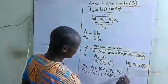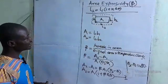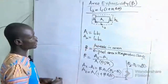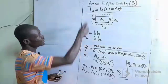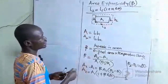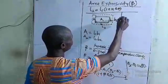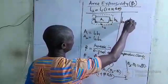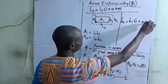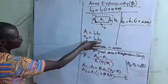Now if we want to relate the area expansivity with the linear expansivity, we make use of the following. The increase in length gives L2 = L1(1 + α·Δθ). The increase in breadth will equally be given as B2 = B1(1 + α·Δθ). This is our expression for the increase in breadth.